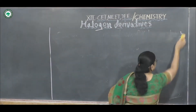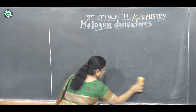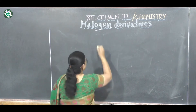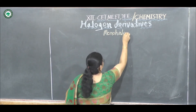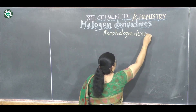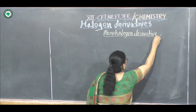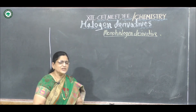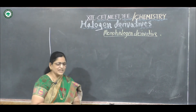Next point is classification of monohalogen derivatives. Monohalogen derivatives means compounds containing only one halogen atom.